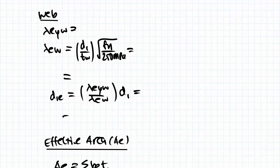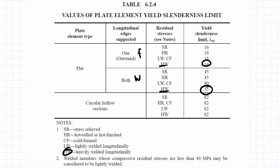Now our first step is to actually find out the slenderness yield limit, but this time for the web. And to do that we'll be looking back at table 6.2.4.